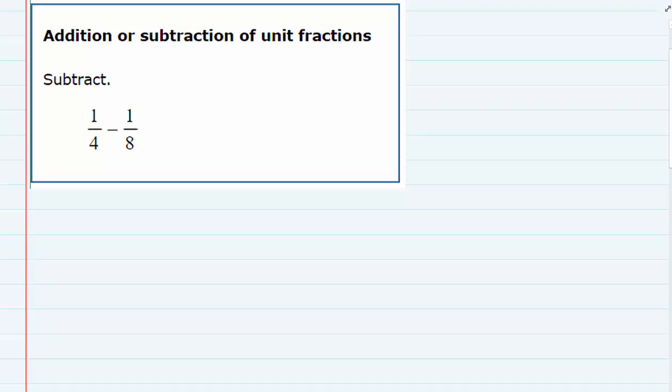Here we're being asked to subtract two unit fractions. Unit fractions just means that we have a 1 on the top and a positive integer on the bottom - 1, 2, 3, 4, 5 counting numbers - so we've got 1 over that counting number. So 1 fourth minus 1 eighth.